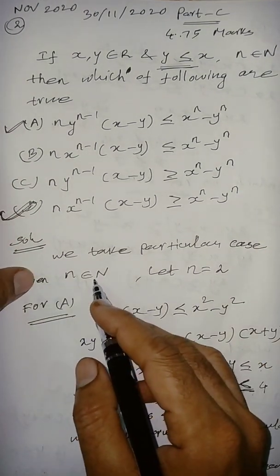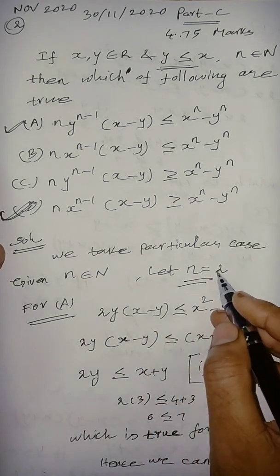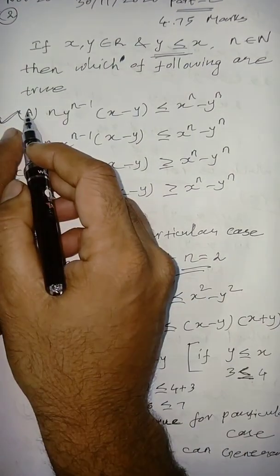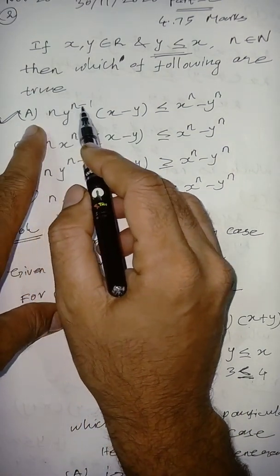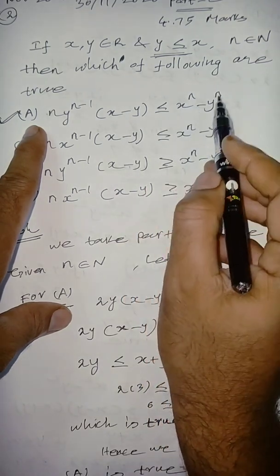So, given this integer, let I take n equal to 2. So, first option A, n into y power n minus 1, into x minus y, which is less than or equal to x power n minus y power n.